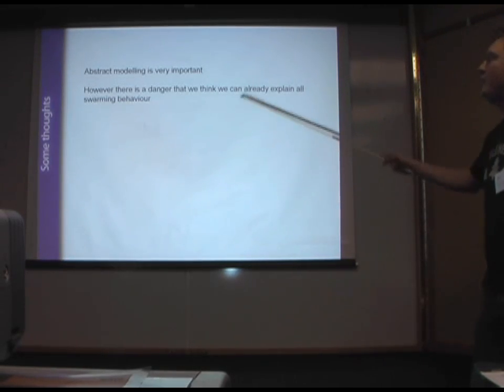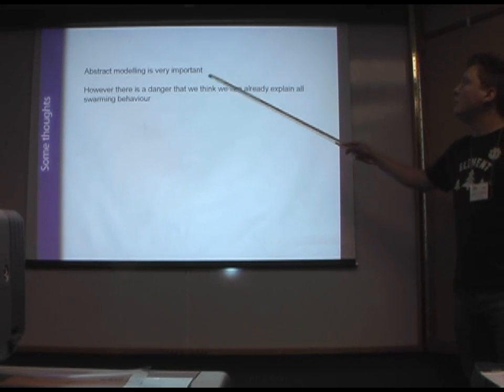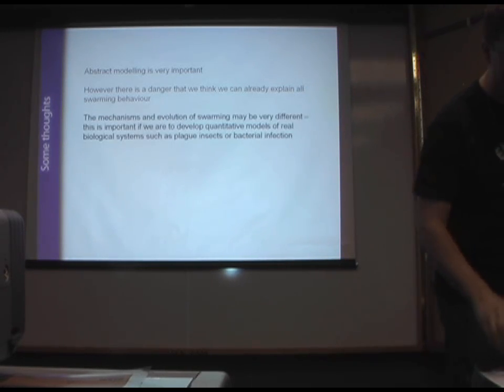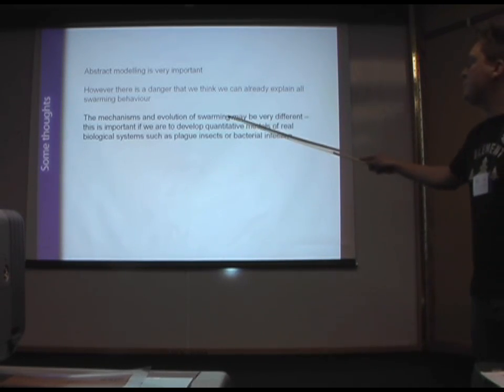I think the abstract modeling is very important. I'm not trying to knock it at all. But I think there is a danger that we lull ourselves into a false sense of understanding the system that we don't really understand. The mechanisms in evolution of swarming may actually be very different, something I'll discuss tomorrow. And this is important.